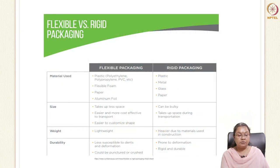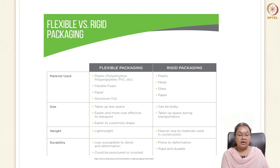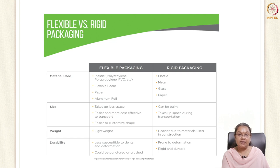This comparison table shows the difference between flexible and rigid packaging. In flexible packaging, we have polyethylene, polypropylene, flexible foams, papers, and aluminum foils. In rigid packaging, we have papers, glass, and metals, which are hard in shape and structure. Flexible packaging materials take up less space and are easier and more cost-effective to transport, and the shape can be customized. Rigid packaging is bulky, occupies larger space, has higher cost, and is heavier.